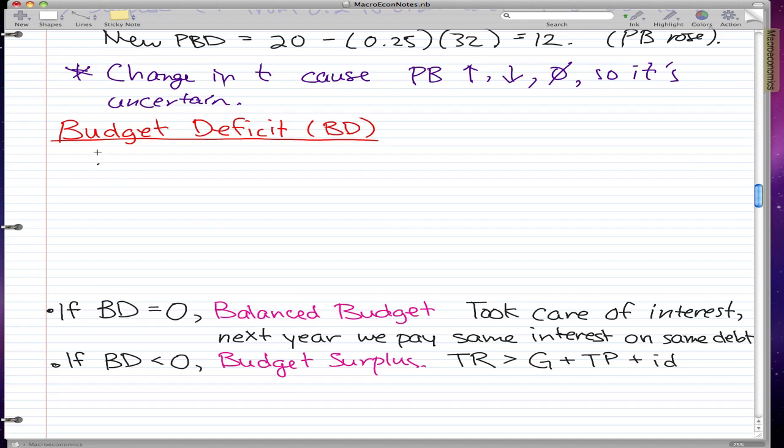This video will center around the budget deficit, which we'll abbreviate as BD. Let's start with the formula for the budget deficit. The formula is BD equals PBD, which is our primary budget deficit, plus ID.